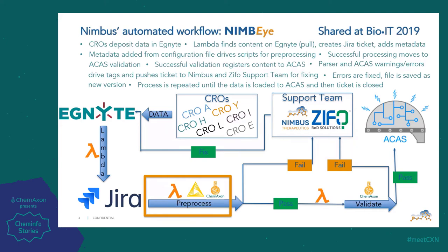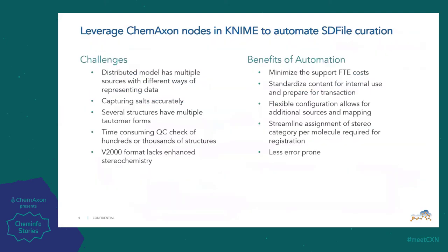Today I'm going to focus on the NIME and ChemAxon piece for pre-processing the SD files. The challenges that come with automating SD file curation are the distributed model we belong within — there are multiple sources and different ways that they represent data. We need to quickly take information from any collaborator and put it into our database without much hand-holding. Sometimes compounds are shared with salts drawn with a structure, which we need to remove and add to data fields. Several structures have multiple tautomer forms, and we need to be sure we're not registering multiple tautomer forms and assigning unique IDs to them. We also do many virtual screens, which would be very time-consuming to QC check when hundreds or thousands of structures come in SD files.